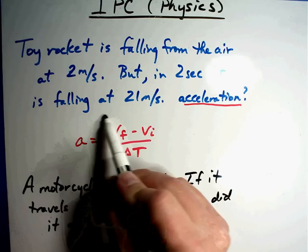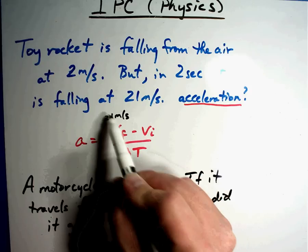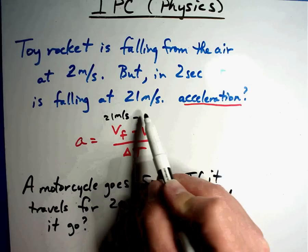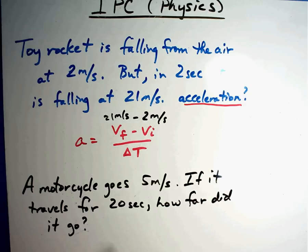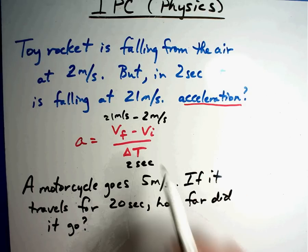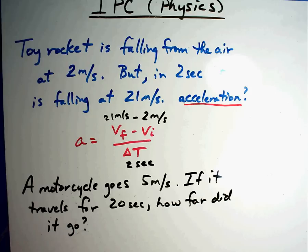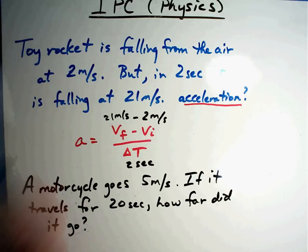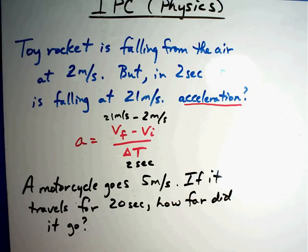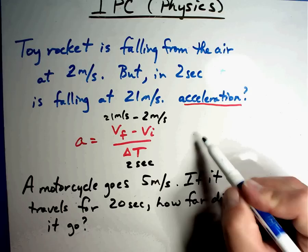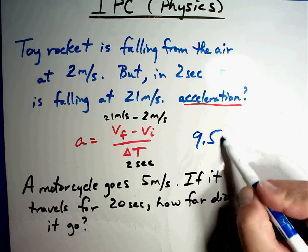Final velocity was 21 meters per second. At the beginning, so that's going to be minus 2 meters per second. And how long did it take? It took 2 seconds. Well, that seems like easy math. Let's see if we can put it in our calculator. 21 minus 2 is 19 divided by 2 seconds, answer 9 and a half, 9.5 meters per second squared.